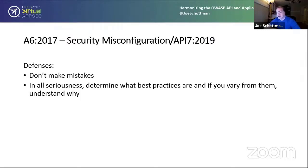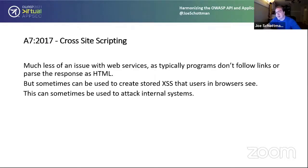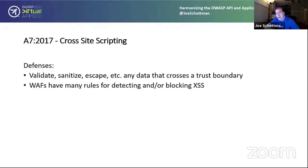Cross-site scripting was rolled into a different category in the 2021 list and does not appear in the API top 10. It's not that common in web services because it's a HTML/JavaScript browser attack and APIs are machine-to-machine communication. However, you do sometimes see it where you can use an API to execute an XSS attack on an administrative panel — if you can figure out that content you're putting into a database will be seen by a web browser, you can perform XSS attacks and potentially use them to attack internal systems when an administrator on the intranet logs in. Defenses: validate, sanitize, and escape anything crossing a trust boundary, and make sure your WAF rules for XSS are enabled and tuned.